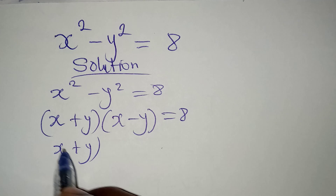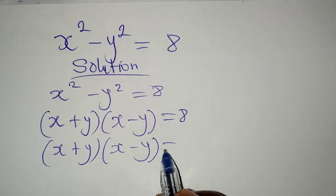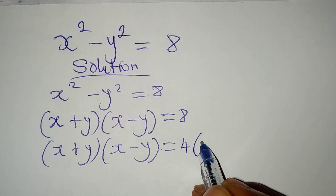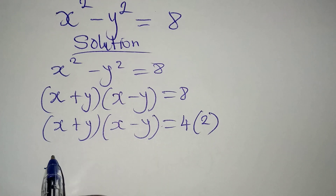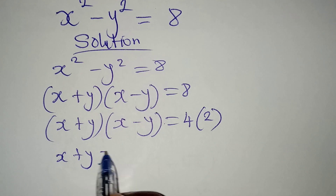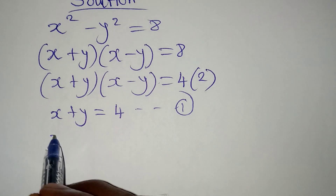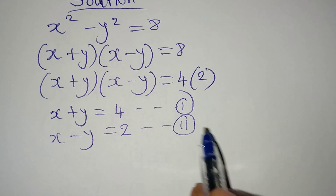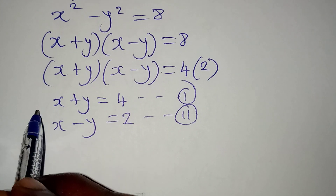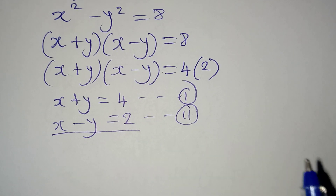So we have x plus y into bracket x minus y equal to four times two. Now we are going to compare: x plus y equals four becomes equation one, and x minus y equals two becomes equation two. Now we can apply the elimination method of simultaneous equations.